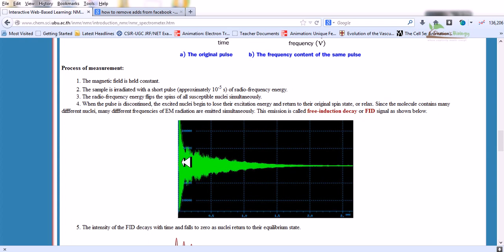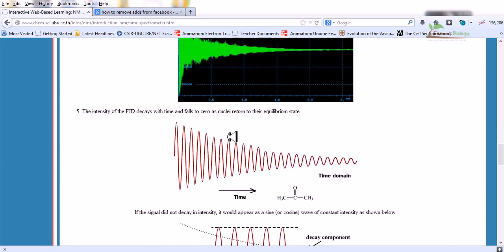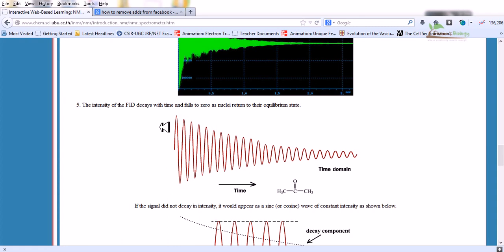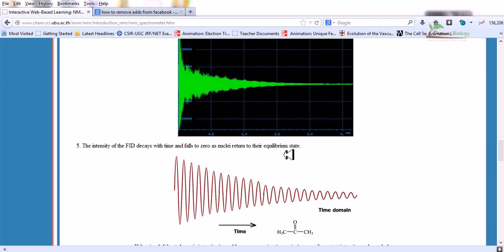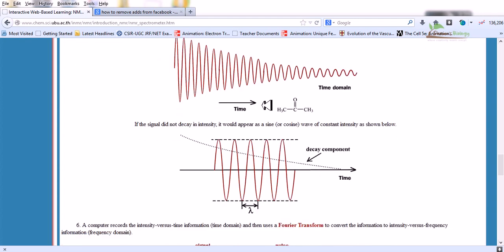At the beginning when the pulse hits the sample, it absorbs the energy and the detector shows very intense peak. Then the intensity of the peak decreases as they are losing energy. This emission is called the free induction decay or FID signal. This is the starting of hitting the pulse, and as time passes the emitted energy is getting decreased. The intensity of the FID decays with time and falls to zero as nuclei return to their equilibrium state. This is the most important part to understand about NMR.